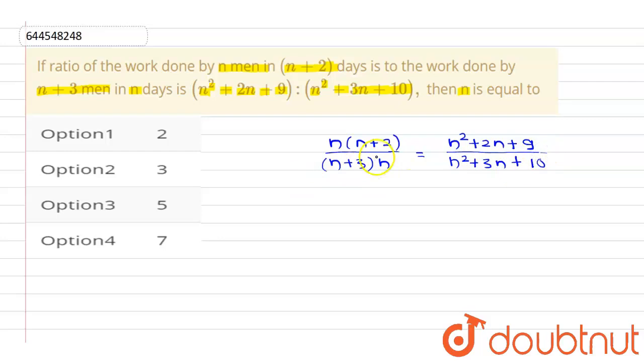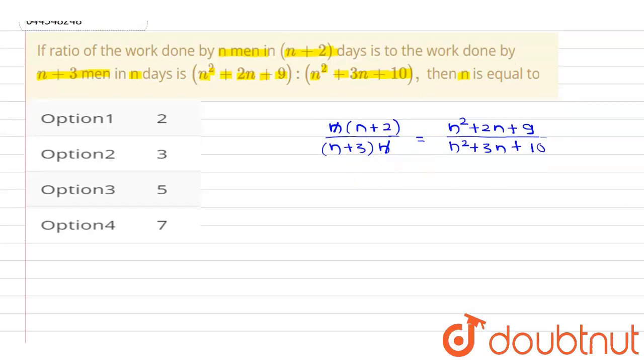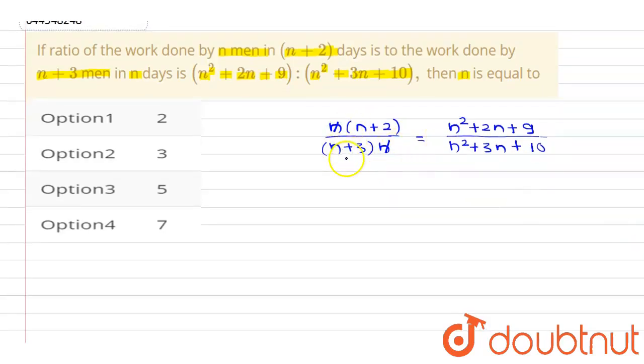Now we need to simplify this to get the value of n. We can cancel out n from numerator and denominator, leaving us with (n+2)/(n+3) equivalent to this.